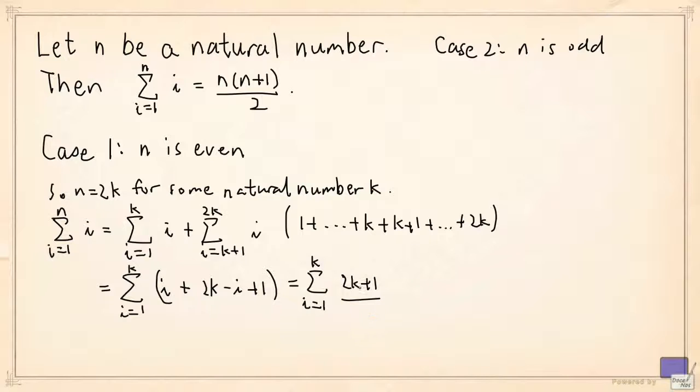So each of these is the constant 2k plus 1 and there are k of these in the sum. So the final answer is going to be k times 2k plus 1. But what is 2k here? 2k is the same as n and so k is n over 2. So writing everything in terms of n, we get n over 2 times n plus 1, which is precisely what we want to prove.